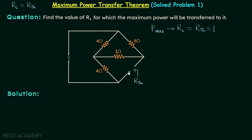We will first do some markings in this network to understand the combinations we have in a better way. I will say this terminal is terminal A and this terminal is terminal B. This will make this node node A and this node node B. This point, this point, and this point will have the same potential, and therefore this will be node A as well. Now we are left with this node and I will call it C.